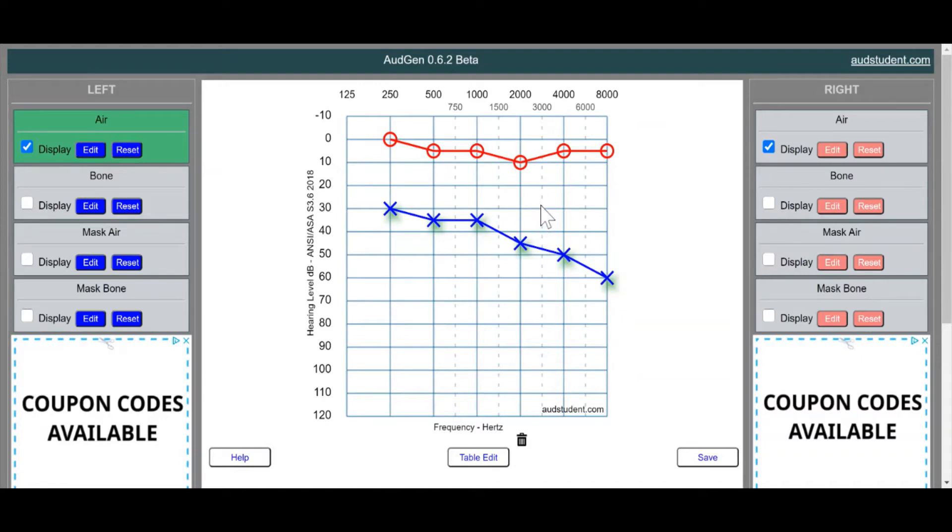So now that we have the air conduction done, let's move on to the type of hearing loss that it is, which was sensorineural. Now by definition, a sensorineural hearing loss means that the bone conduction and the air conduction thresholds are outside of normal limits, with no significant air bone gap. Again, remembering that significant means anything greater than 15 decibels.